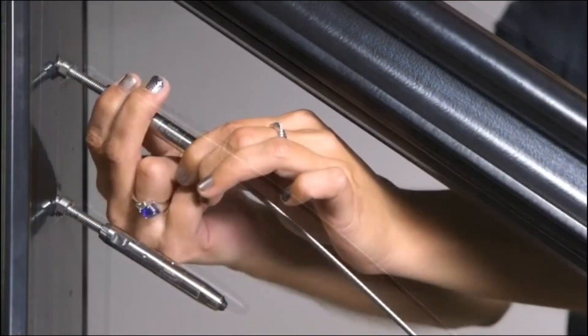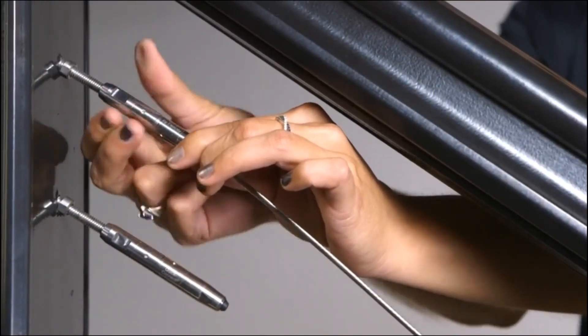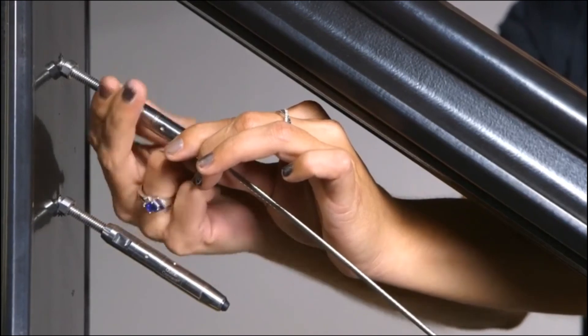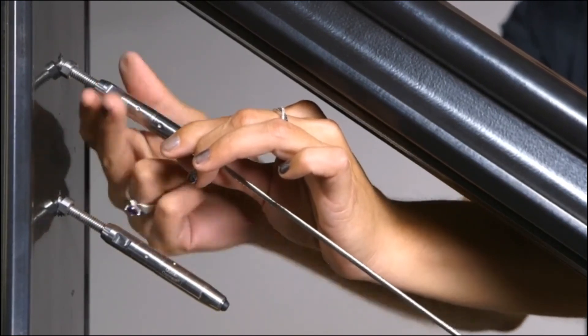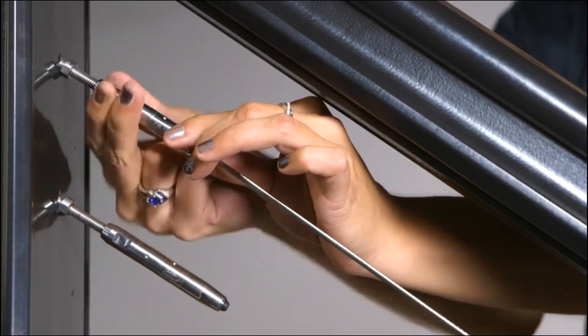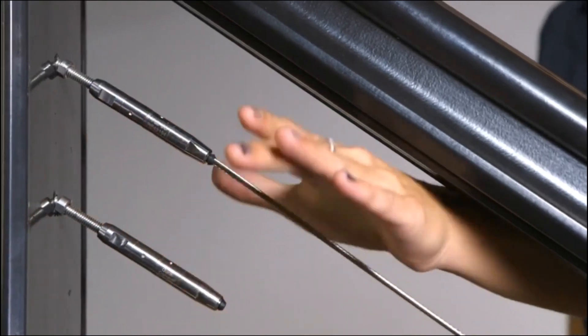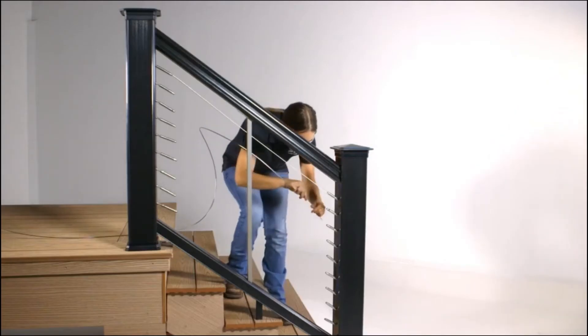Hand tighten the turnbuckle as far as possible, then swiftly hit the cable line with your palm several times to ensure that the jaws are securely seated. Repeat this process for all cables.